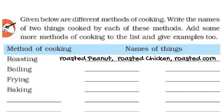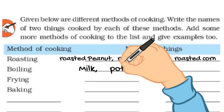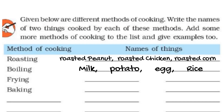Boiling is the process in which we boil water and add food items into that boiled water so they get cooked. This is known as boiling. Examples of boiled food items include boiled potatoes, boiled eggs, and boiled rice.